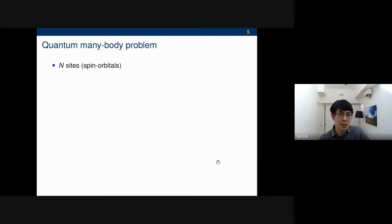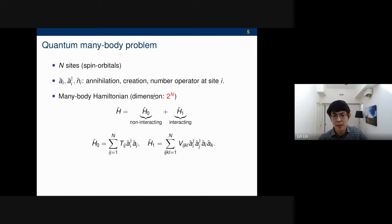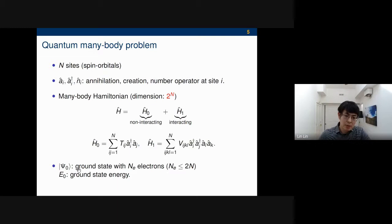More mathematically, we have seen this a couple of times for the quantum many-body problem. We assume the second quantized formulation. You have n-sites, or spin orbitals, where AI, AI dagger are the annihilation and creation operators. The many-body Hamiltonian nominally is a huge matrix of size 2 to the n. It can generally be written as the summation of two parts: the non-interacting part H-naught, and the interacting part. Importantly, this non-interacting part is a quadratic Hamiltonian, and H1 is this quartic Hamiltonian. We also write psi-naught to be the ground state with n_e electrons. If n_e is like n, it cannot exceed 2n. If it is n, it's half-filling. But if you go to plane wave-based discretization, n_e is going to be much smaller than n, and E-naught is the ground state energy.